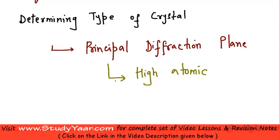So for a simple cubic structure, all combinations of h-k-l are essentially your principal diffraction planes.